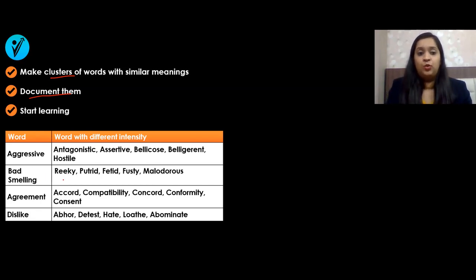Assertive does not necessarily mean aggressive—it means you are getting across your point in a straightforward manner. But I can group it so I can remember it has something to do with a stringent tone. Bad smelling: anything related to bad smell—we have reeky, putrid, malodorous. You can break malodorous into root words: 'odor' has to do with smell, 'mal' shows it is bad, so malodorous means bad smelling.